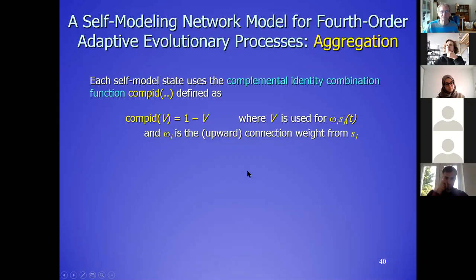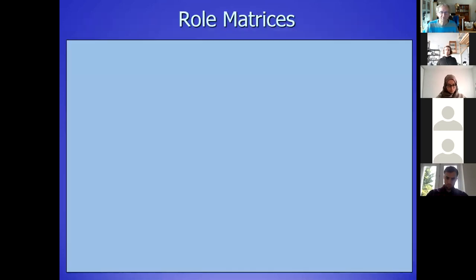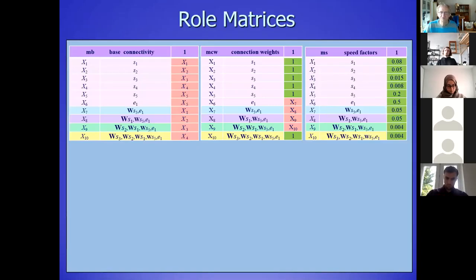Before the simulation I will introduce a new combination function that's in the library — it's a kind of opposite of the identity function. Instead of the value itself, you take one minus the value: if the value is low you have a high output and if the value is high you get a low output. It works more or less like a negative link but not completely the same. I've chosen this one because it's easier to use in this case.